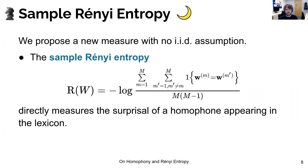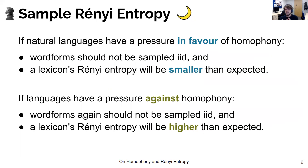So what we do is propose a new measure with no IID assumption that is closely related to the previous one, which we term the sample Rényi entropy. This directly measures the surprise of a homophone appearing in a specific lexicon — basically, the number of homophones in the lexicon divided by the maximum number of homophones that a lexicon of that size could have. So if natural languages have a pressure in favor of homophony, word forms should not be sampled IID, and the lexicon's Rényi entropy will be smaller than expected, meaning a homophone will be less surprising. If languages have a pressure against homophony, a lexicon's Rényi entropy will be higher than expected, so a homophone should be more surprising than expected.